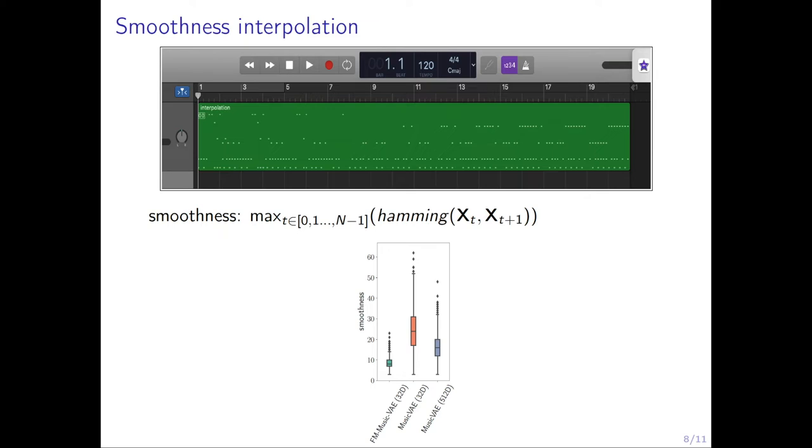We also have numerical results. We measure the smoothness using Hamming distance. With a small number, it's more smooth. We can see from here, if we increase the latent dimension, usually we have more smooth latent space. But for our model, even if we use a very small latent space, we can have better smoothness compared with the baseline.